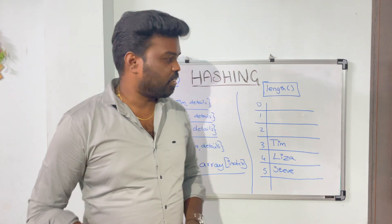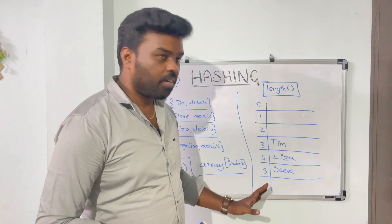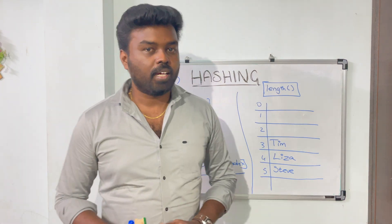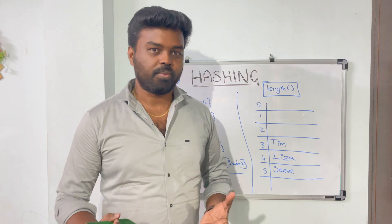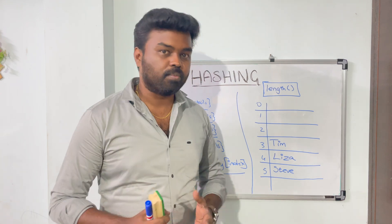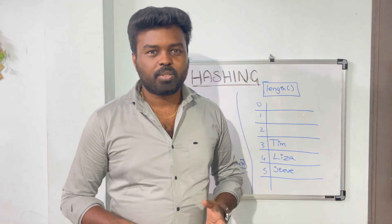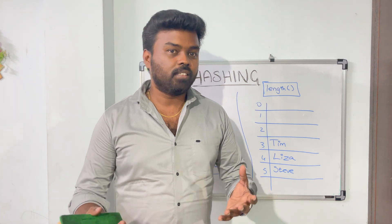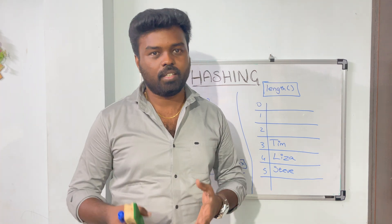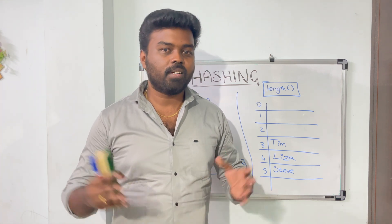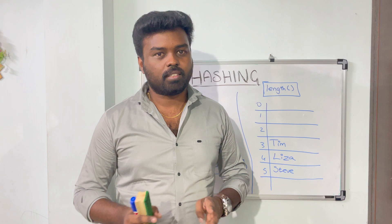Now there are some issues in this approach. One problem is that the array size gets bigger. Even though our number of employees is very small — say just three — we still need an array with a size of five because some employees have more characters in their name. For example, Steve has five characters, so we need to put that employee at the fifth index. And imagine some employee might have 20 characters — we'd need an even bigger array. So we might have solved the time complexity problem, but we didn't solve the space complexity problem.